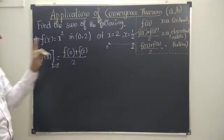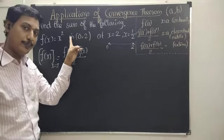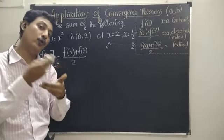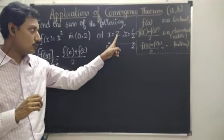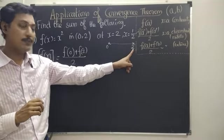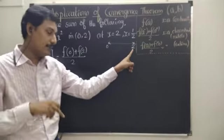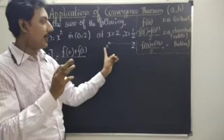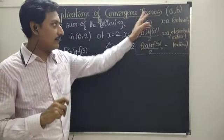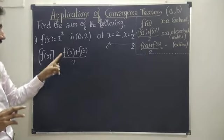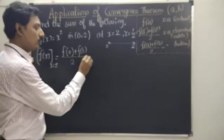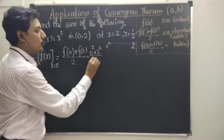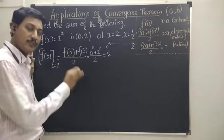This is the open interval, meaning both points 0 and 2 are not included — they are points of discontinuity. So at x equal to 2, which is the right end of the interval, by convergence theorem, take the average of both endpoint values: f(0) plus f(2) by 2. Substituting: 0 squared plus 2 squared by 2 equals 4 by 2, which is 2. So the sum at x equal to 2 is 2.